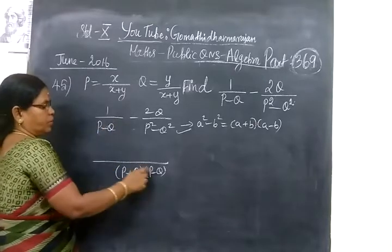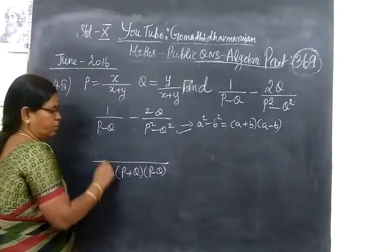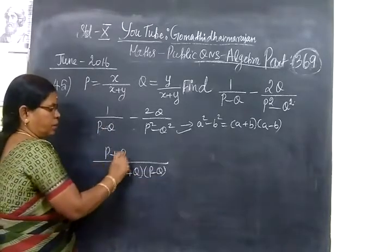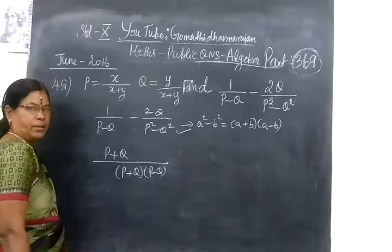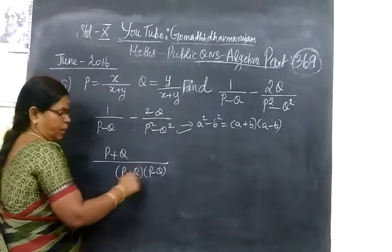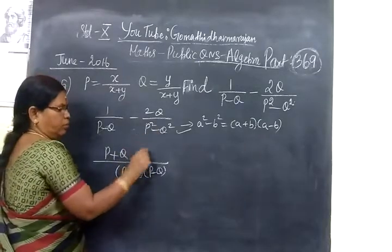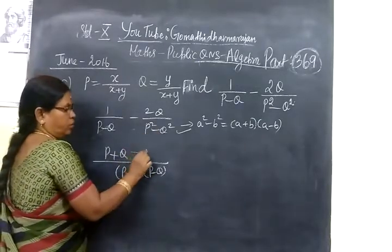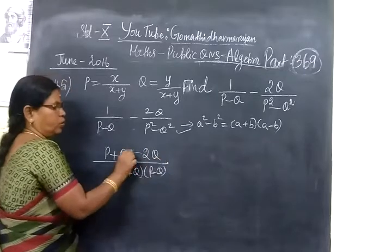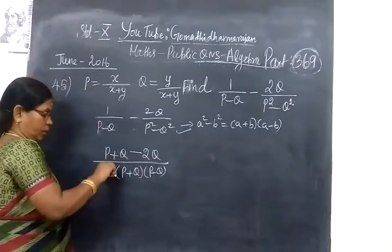So then we have (P-Q) in the denominator. P-Q cancels, and the remaining term is (P+Q). So you just write minus 2Q itself with denominator (P+Q).